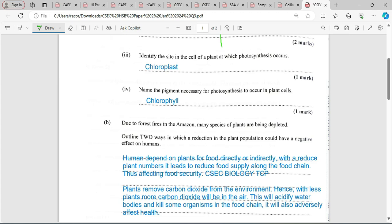Now due to forest fires in the Amazon, many species of plants are being depleted. Outline two ways in which a reduction in the plant population would have a negative effect on humans. There are many ways, but it asks for two.